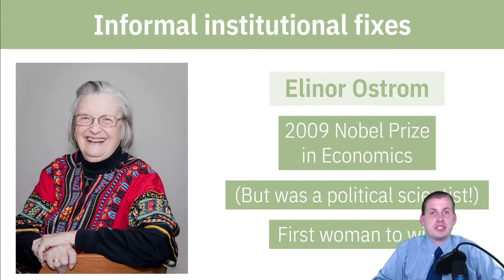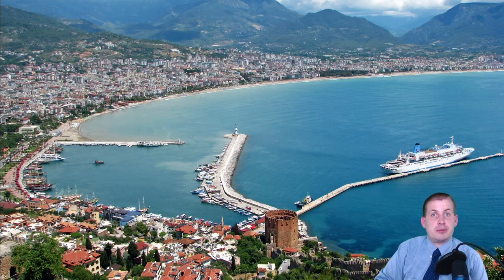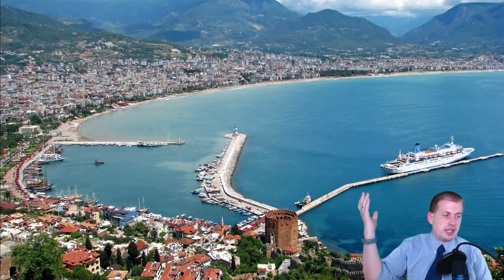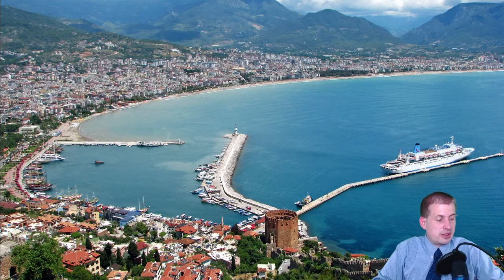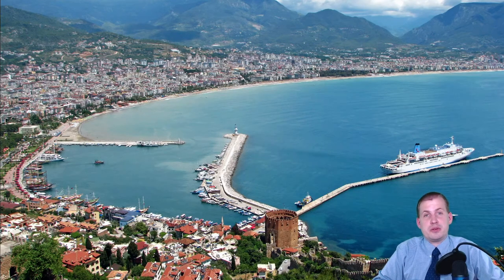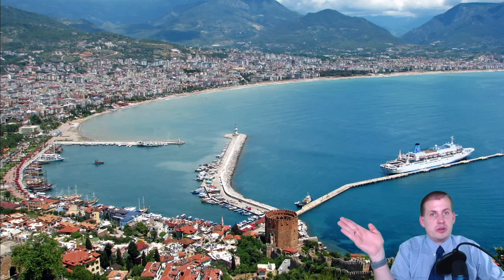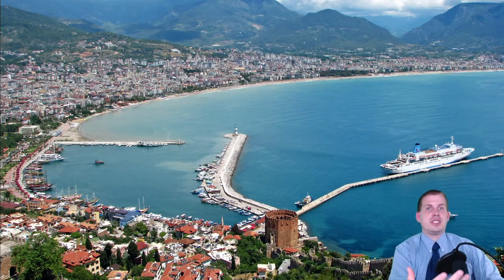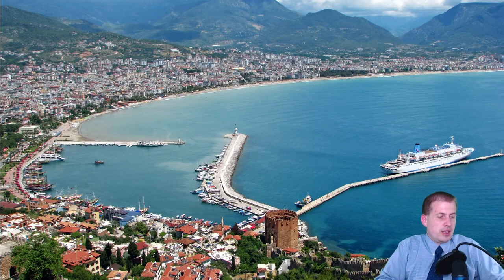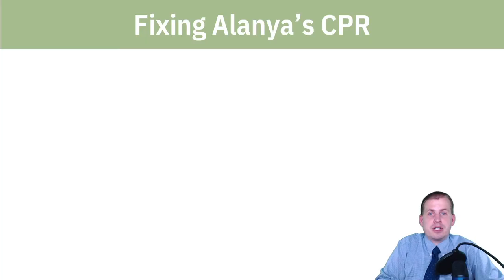Ostrom looks at how informal institutions can shape governance and people's access to public goods. One illustration from her book Governing the Commons involves fishermen in Alanya, Turkey — a small tourist and fishing village. She found there was natural overfishing: 100 fishermen would wake up super early, rush to the best spots, overuse them, and then wake up even earlier the next day. It devolved into a commons issue — a race to get the best fish, with everybody overusing the commons.